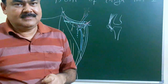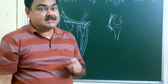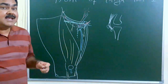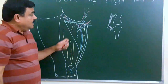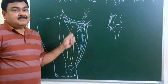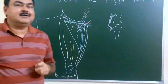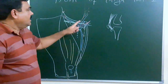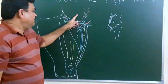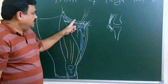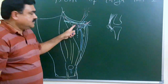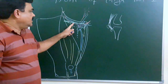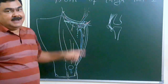Holden's line is clinically important in cases of extravasation of urine in rupture of the urethra, because urine cannot pass below this line. This is Holden's line.